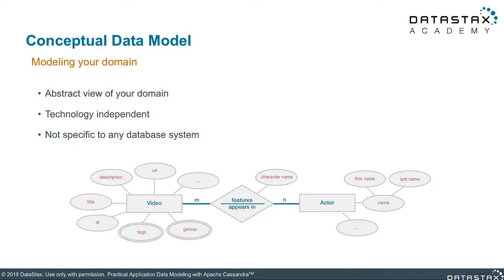What we'll discuss in this section is conceptual data modeling, which is essentially taking all the objects in your domain, determining their attributes, and how all of them are related together. Here's an example of a conceptual data model. You can see we have a video and an actor and a relationship type in the middle. We'll talk about these in detail in the next few slides. This is an abstract view of your domain.